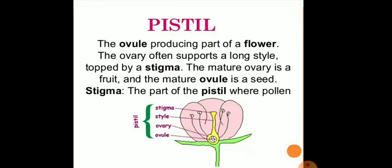The second part is the carpel, or we can say the pistil. In the centre of the flower, it is a flask-shaped structure. There are mainly three parts in the pistil: first is the stigma, second is the style, and then the ovary. The stigma is the sticky top portion of the carpel. The ovary is the enlarged base which is slightly swollen, and the ovary contains small structures called ovules. The stalk that connects the stigma and the ovary is called the style. This is the pistil, which is the ovule-producing part of a flower.